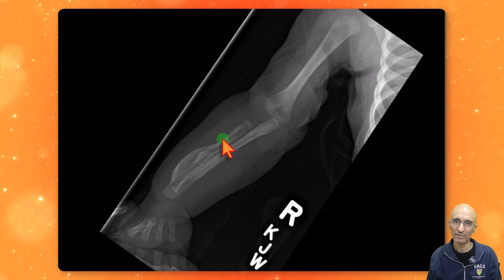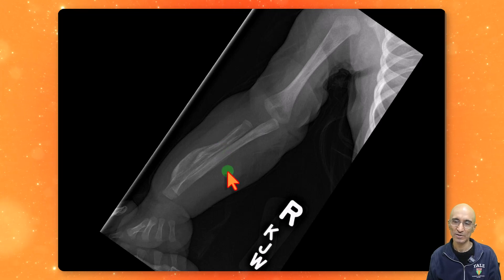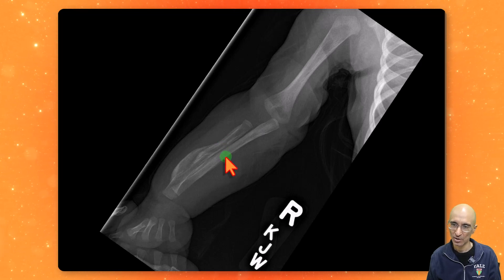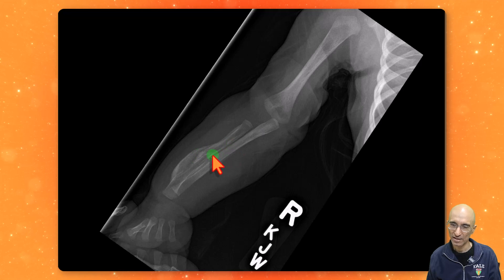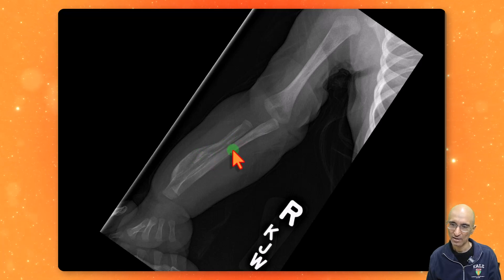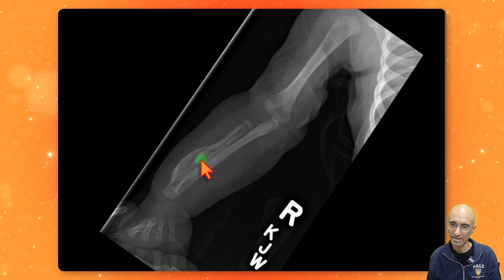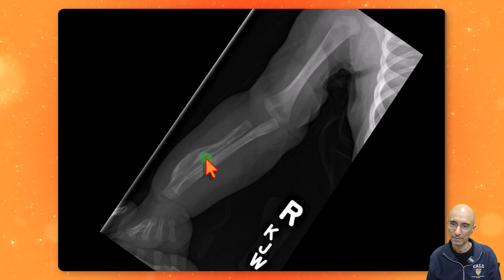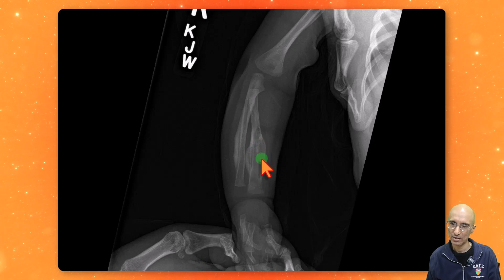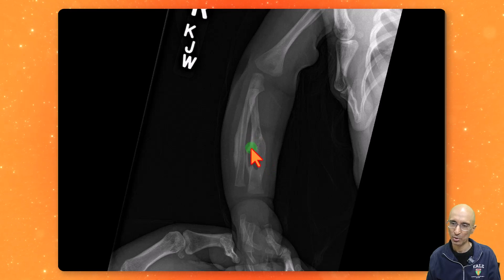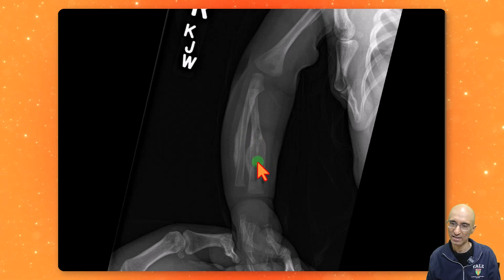The patient underwent radiographic examination at an outside institution. On the radiograph we can see marked thickening of the diaphysis of the ulna and also the radius with dense subperiosteal bone formation. Again, seen on the lateral view, dense subperiosteal new bone formation in both radius and ulna.